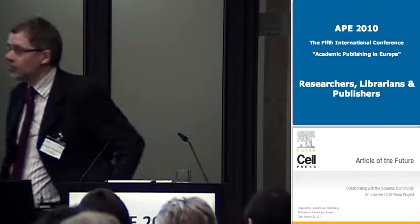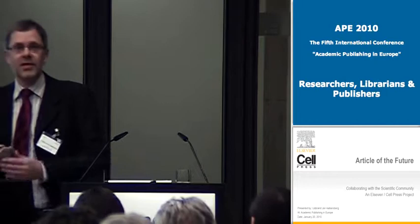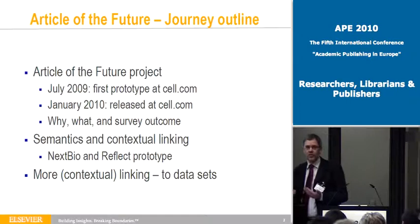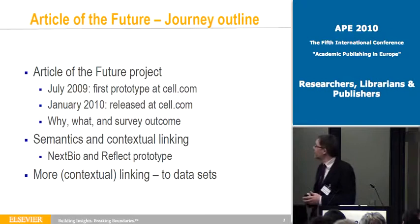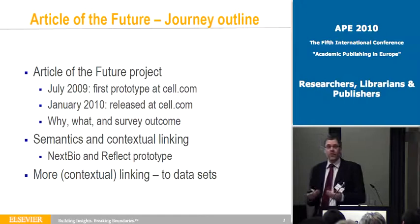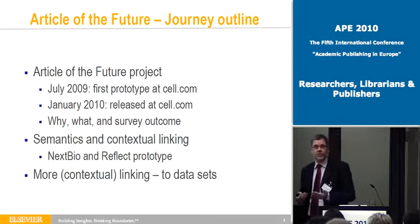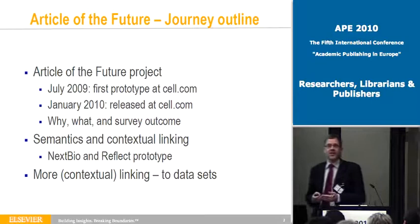We try to find and use the web, and find ways to really look at the different tasks that users have, the different problems they have, and see whether in a domain-specific way we can solve those tasks and present the article in a new way. What I will tell you this morning is the journey of the Article of the Future Project. We started prototyping, did a first prototype last year, launched it in July, and just two weeks ago we launched the first real version on cell.com. I will cover why we did that, what we did, user results, and then talk about semantics and contextual linking.